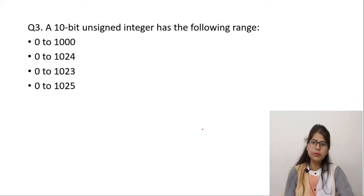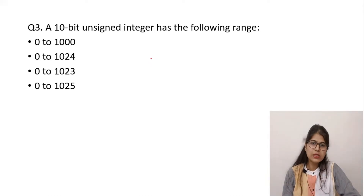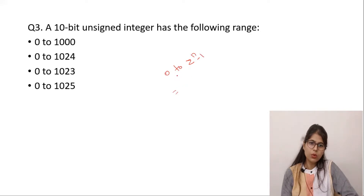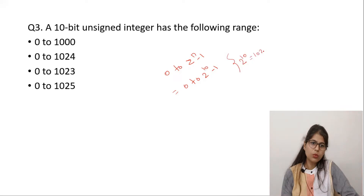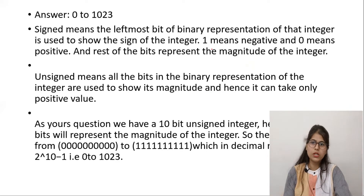Here is the first question: a 10-bit unsigned integer has the following range. We just saw the formula for calculating the unsigned range — all values will be positive only. For 10 bits, the formula gives 0 to 2^10 − 1. 2^10 is 1024, so when we subtract 1 we get the range as 0 to 1023. So we can represent 0 to 1023 in a 10-bit unsigned integer.